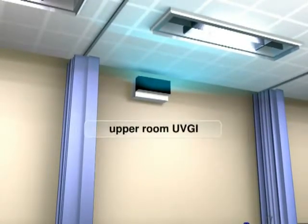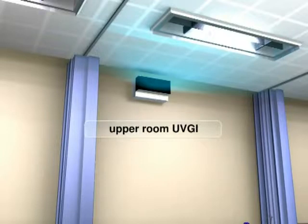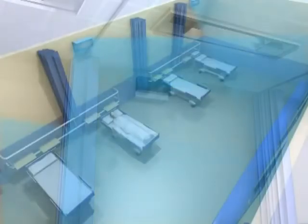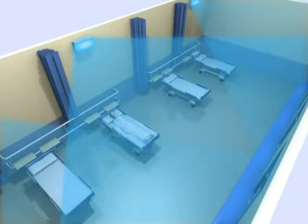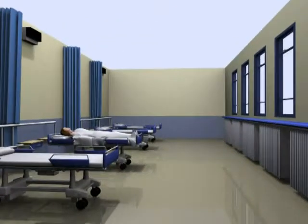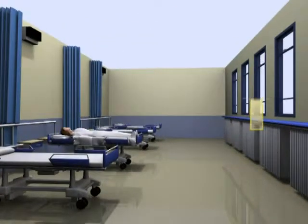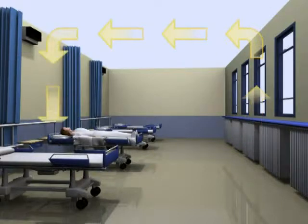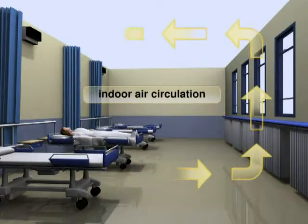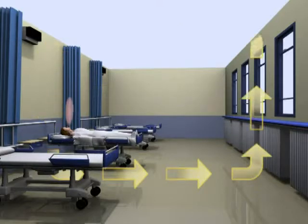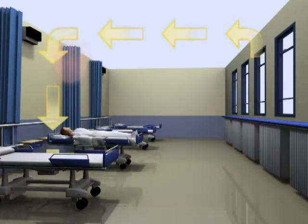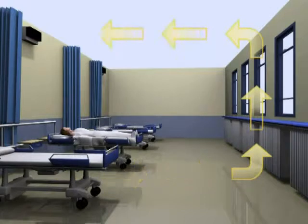UVGI lamps with an armature will be installed at a safe height in the patient room, where they can perform 24 hours a day. There will always be air circulation in the room. The infected air exhaled by the patients will increasingly pollute the air present. When this polluted air flows through a zone radiated by a UVC lamp, the purifying effect will occur, and the existing bacteria, viruses and other microorganisms will be deactivated.